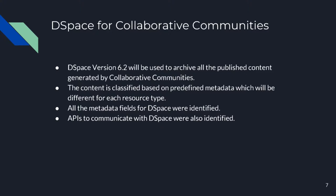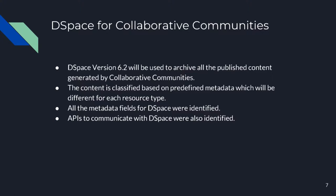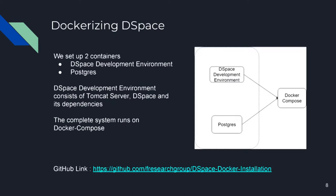We are using DSpace version 6.2 to archive all the content published by the collaborative communities. We fetch content from the collaborative communities and store it in DSpace. We identified all the metadata according to the needs of the resources published. We use APIs to communicate with DSpace — identifying, activating and testing all the APIs and the different formats required for the posting APIs. For the environment, we containerized DSpace using Docker, setting up two containers: one for the DSpace development environment with all its dependencies, and one for the database. The whole system runs using Docker Compose, and the DSpace container consists of the Tomcat server, DSpace and its dependencies.